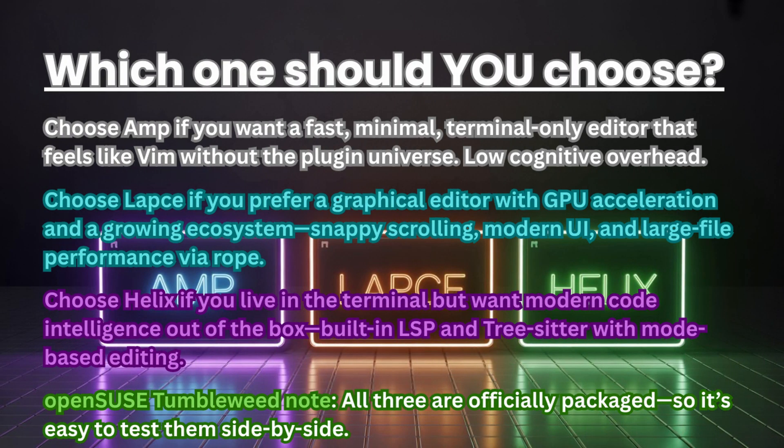Choose Amp if you want a fast, minimal, terminal-only editor that feels like Vim without the plugin universe — low cognitive overhead. Choose Lapse if you prefer a graphical editor with GPU acceleration, a growing ecosystem, snappy scrolling, a modern user interface, and large-file performance via rope. Choose Helix if you live in the terminal but want modern code intelligence out of the box — built-in LSP and tree-sitter with mode-based editing.